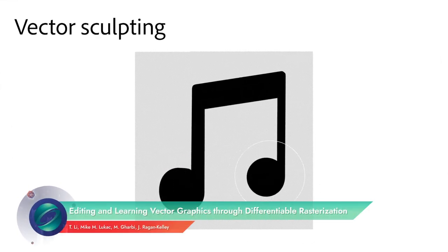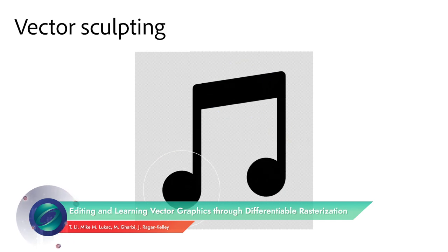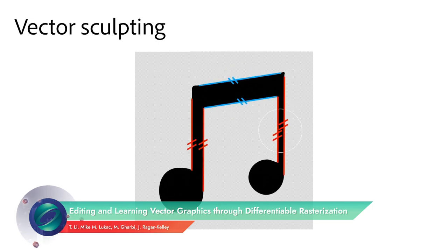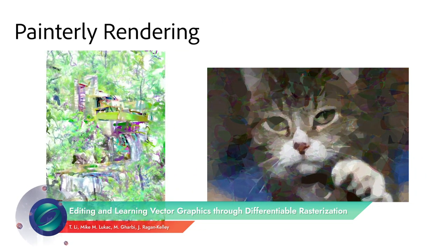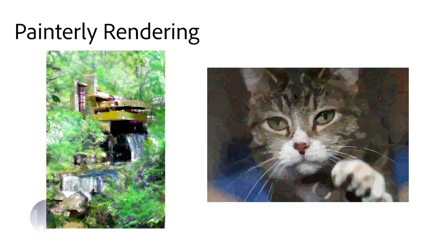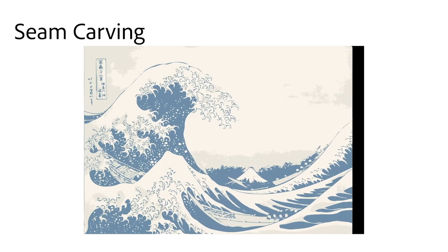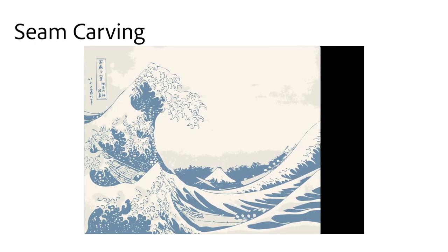Vector graphics is structured and resolution independent. However, design tools have lagged behind their fixed resolution unstructured raster counterpart. These researchers present a differentiable rasterizer to bridge the raster and vector domains so that raster-based algorithms can be used to modify or synthesize vector content.